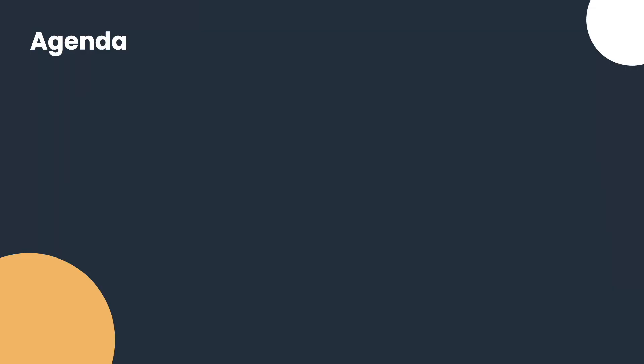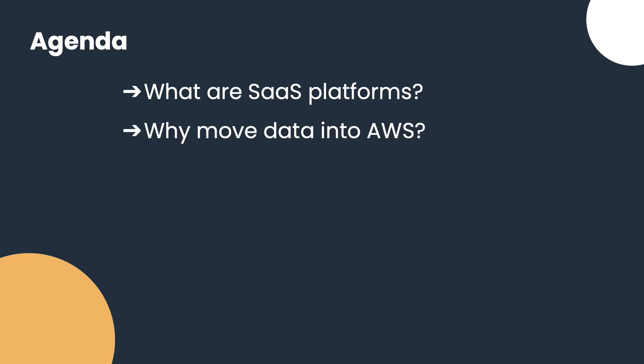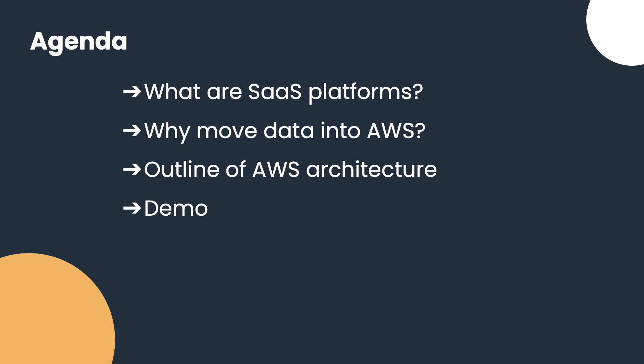Today we're going to be discussing how you can build a cloud data lake from your SaaS platforms using AWS. To outline the agenda: firstly we'll briefly explore what SaaS platforms are, then why we'd want to move our data into AWS, then outline the architecture we're going to build in AWS — a brief overview of the different AWS services — and finally a hands-on demo of building out these services.